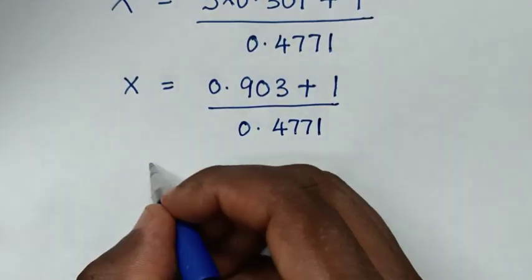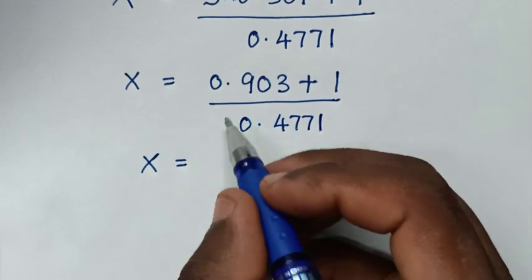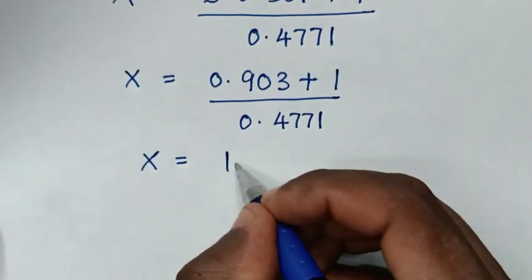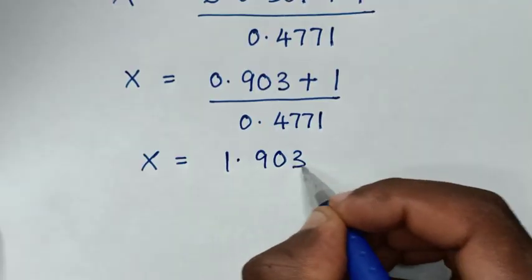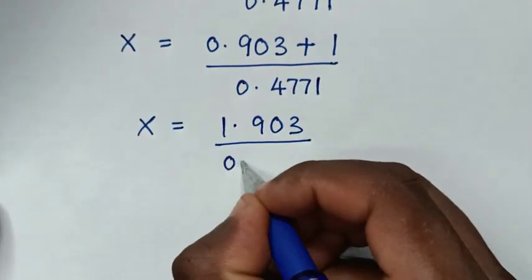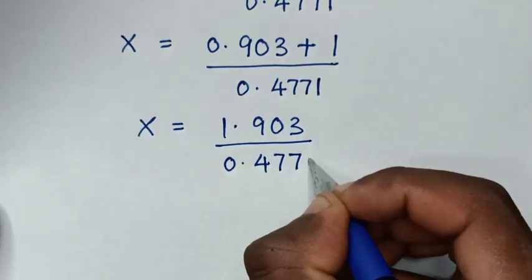Then it will be x is equal to 0.903 plus 1, which is 1.903, over 0.4771.